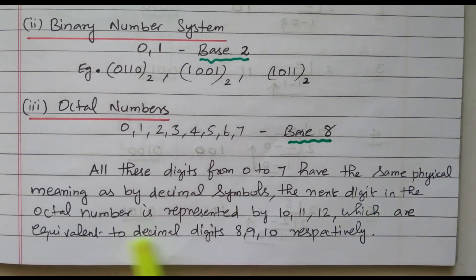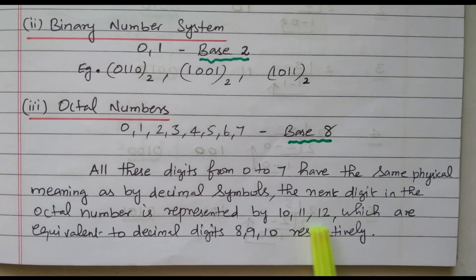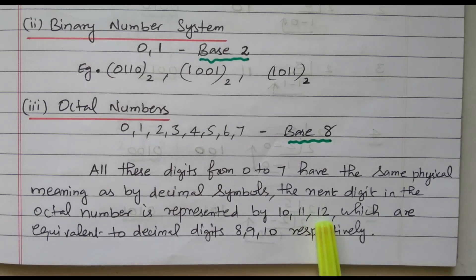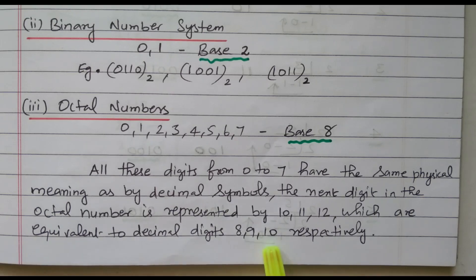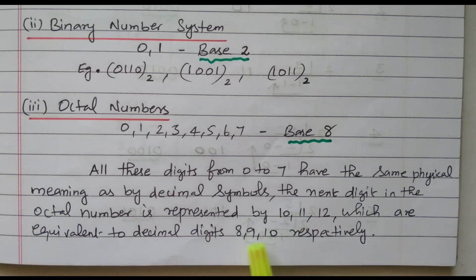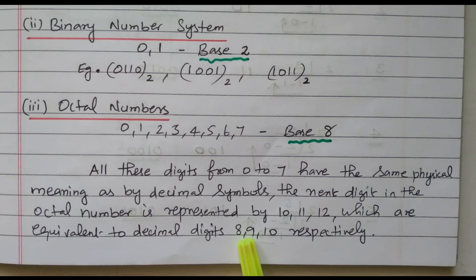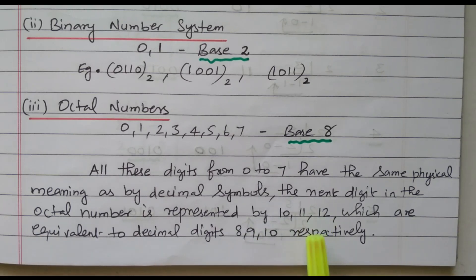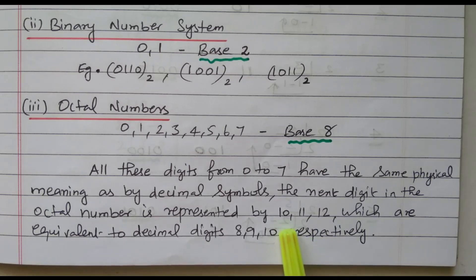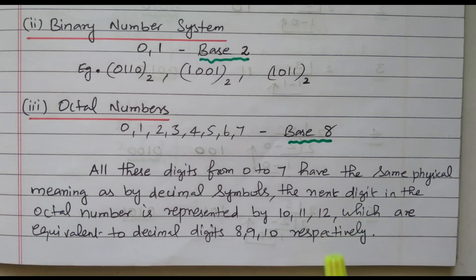After 7, the next digit in the octal number system is represented as 10, 11, 12 — not 8, 9, 10. These are equivalent to decimal 8, 9, 10. There is no 8 or 9 in octal; instead we use 10, 11, 12 respectively. We will see in the next section how we arrive at 10, 11, 12.